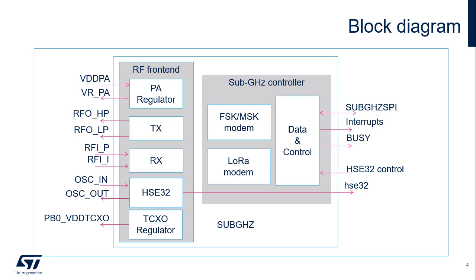Dedicated interrupts are provided to the CPU, as well as sub-Gigahertz radio busy information. The high-speed external 32 MHz clock control enables the control of the high-speed external 32 MHz oscillator and its operation mode, including the temperature-controlled crystal oscillator regulator operation.